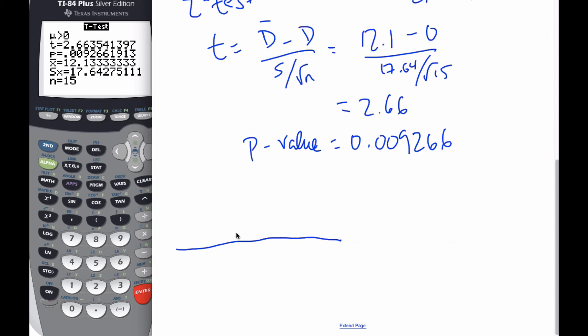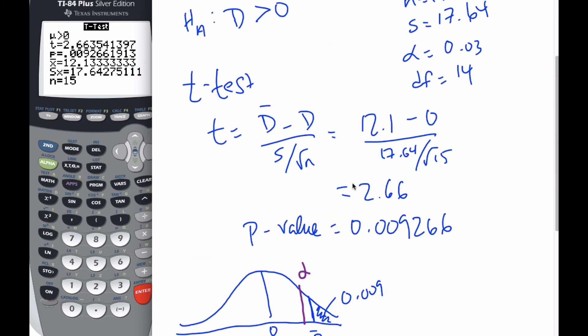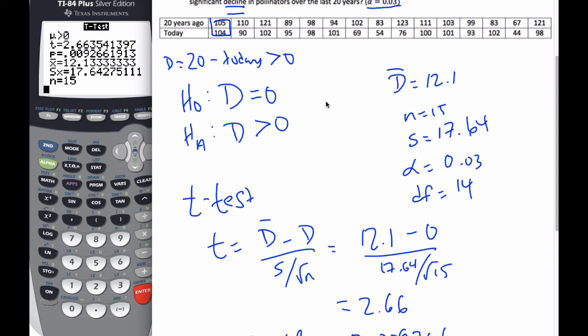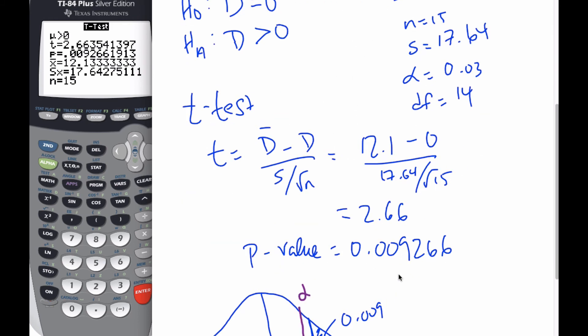So, if I look at my graph, think about my graph, I know here is 0.009266. Here is my D star. And this area is 0.009. It's quite small. Here is where the alpha value would be. So, since alpha is 0.03, my P-value is small compared to alpha.